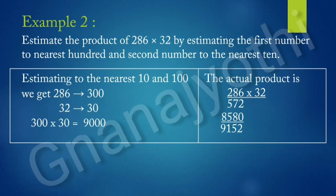Estimating to the nearest 10 and 100, we get 286 is estimated to 300, 32 is estimated to 30. So, 300 into 30 is 9,000.